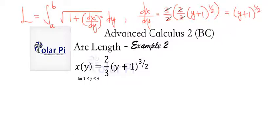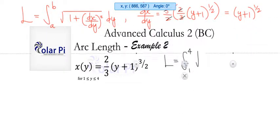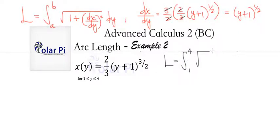So we see that our arc length L is going to have to equal the integral from 1 to 4, right? That's a to b. And then it's going to be square root of 1 plus dx dy squared. But dx dy is that. So that squared is just y plus 1. So 1 plus y plus 1 dy.